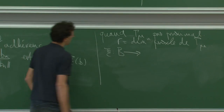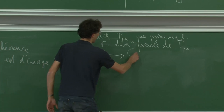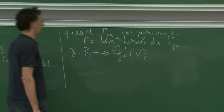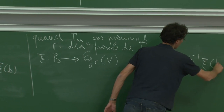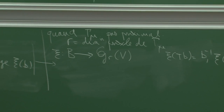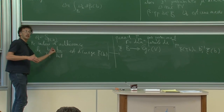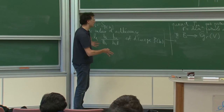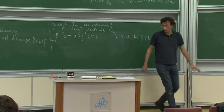L'application xi vérifie la même relation d'équivariance : xi(TB) = B_1^{-1} xi(B). Cela signifie que comme gamma_mu n'est pas proximal, il n'y a pas d'éléments qui contractent sur une droite, mais il y a des éléments qui contractent sur des R-plans. Ces matrices en grand temps ont tendance à contracter sur un R-plan. Du coup il n'y a plus unicité de la mesure stationnaire.